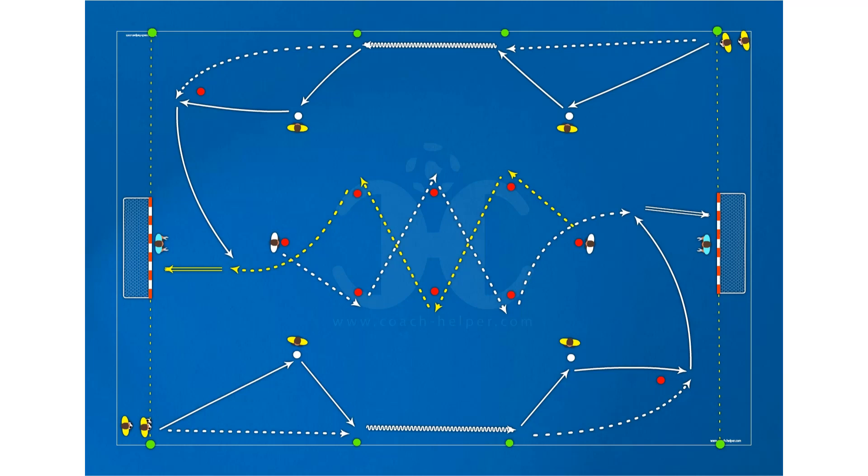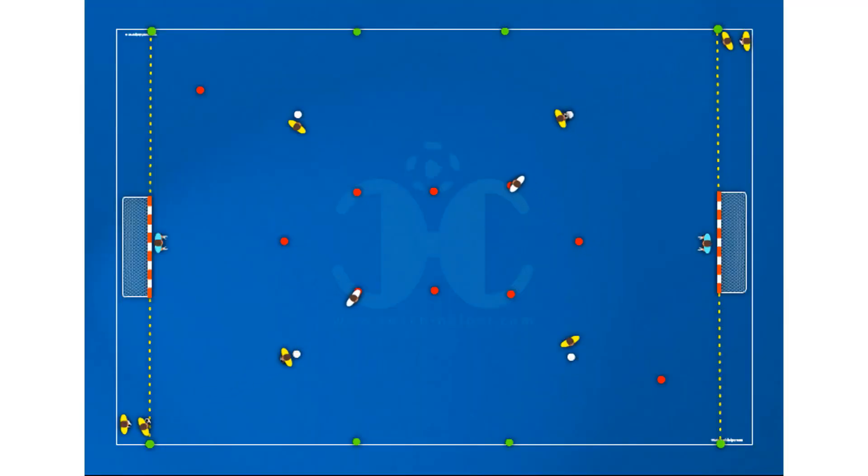This is an aerobic capacity drill. Player one makes a pass and move with player two and runs to receive the ball further ahead, then drives the ball to player three, also making a pass and move. After this last one, he will cross to player four who is already in a finishing position.